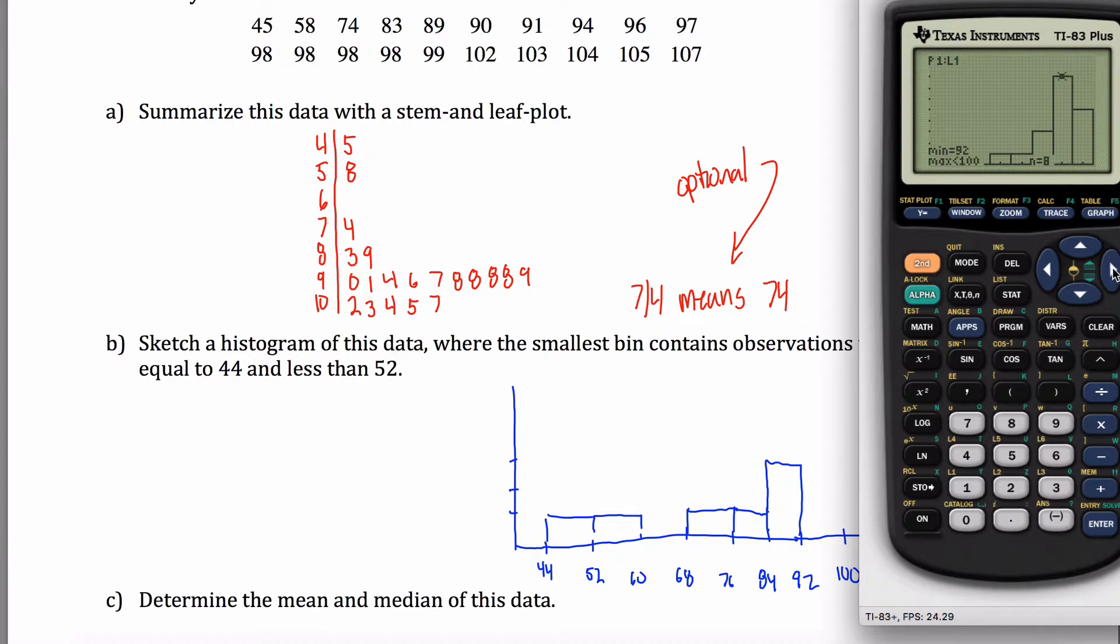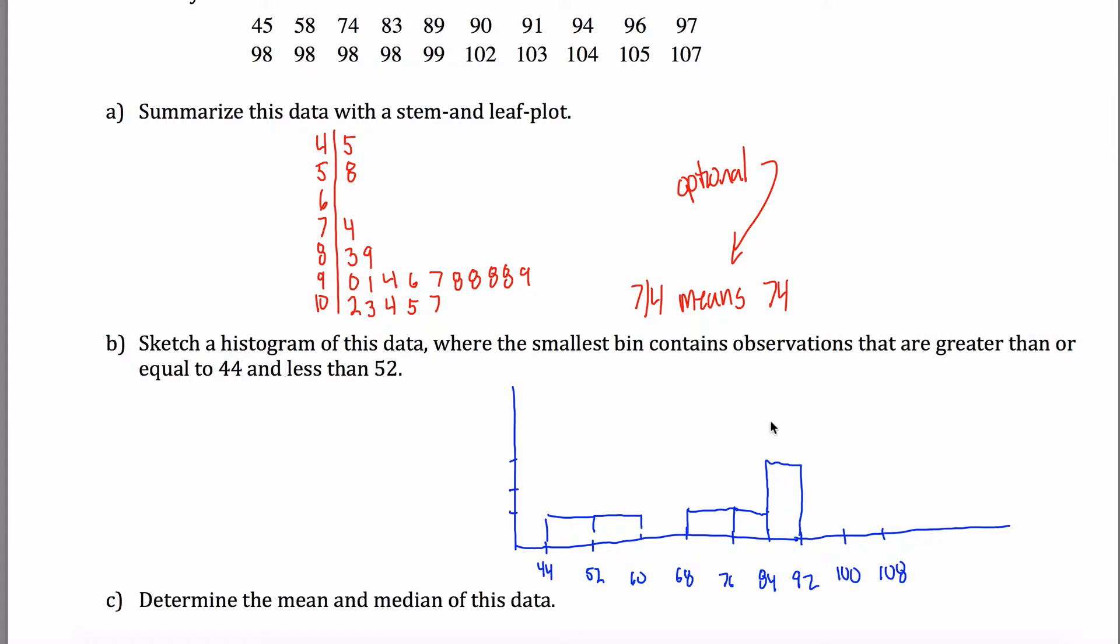And then I get all the way up to eight and then back down to five. One, two, three, four, five, six, seven, eight. And then back down to five. One, two, three, four, five. Something like that. Sketch a histogram of the data where the smallest bin contains observations that are greater than or equal to 44 and less than 52. Looks like I just did that.